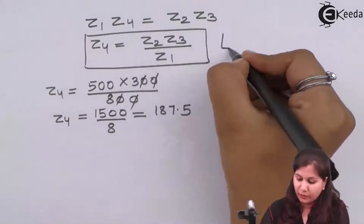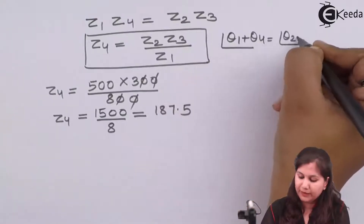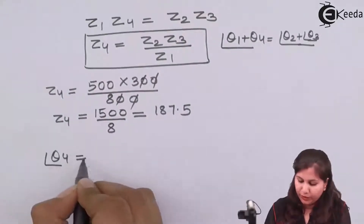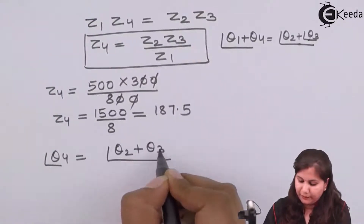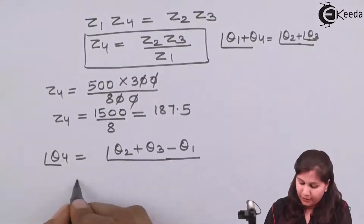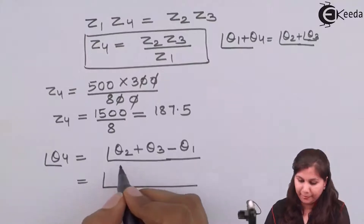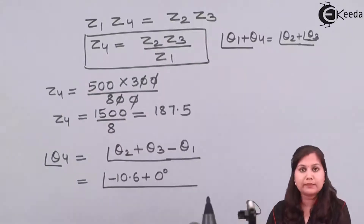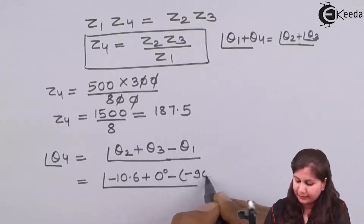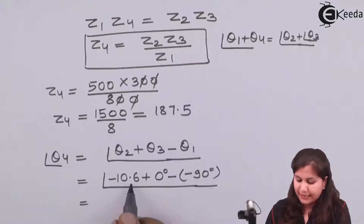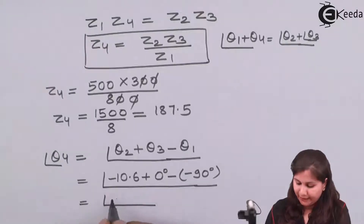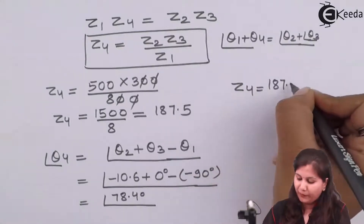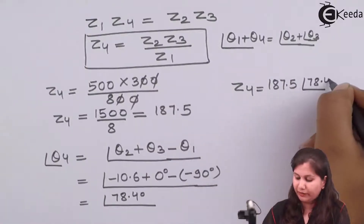For the phase angle we use: θ1 + θ4 = θ2 + θ3, so θ4 = θ2 + θ3 − θ1. θ2 = 0°, θ3 = −10.6°, and θ1 = −90°. So θ4 = 0° + (−10.6°) − (−90°) = −10.6° + 90° = 78.4°. Therefore Z4 = 187.5∠78.4°.